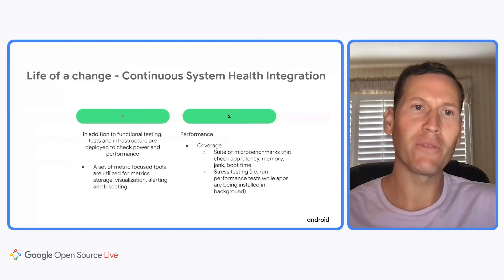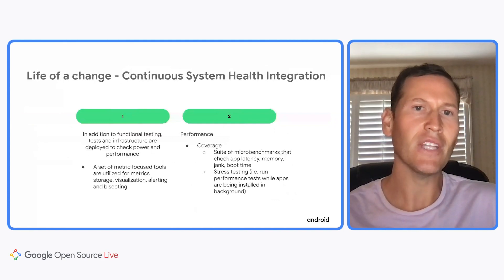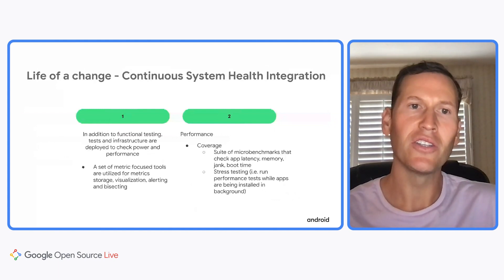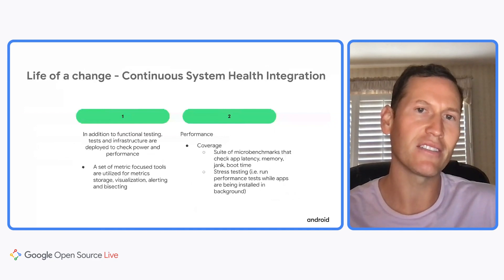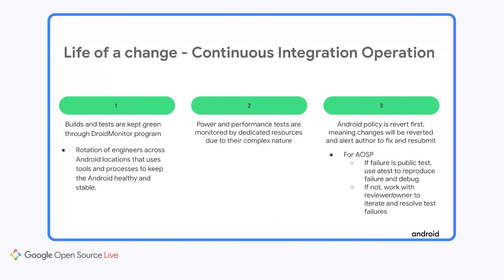System health includes things like power and performance, and these are also very important. A specialized set of performance micro, macro, and stress tests are run. There's a set of tools focused on processing, storing, visualizing, alerting, and bisecting on metric-based tests. Power testing, similar to performance testing, is also metric-based. Power tests have micro benchmarks, as well as more user-realistic day-of-use coverage. Instrumentation is done through physical power meters, as well as software-based data that the device reports. Through the system nature of this area, regressions may need to get escalated to a dedicated team with authority over power and performance. Builds and tests are kept green through a global rotation program of Android engineers that use established tools and processes to keep Android continuously healthy. Power and performance have dedicated monitors due to their complex nature.